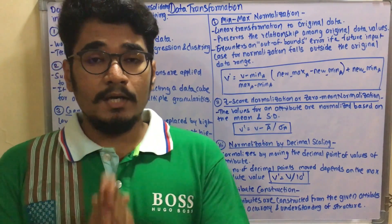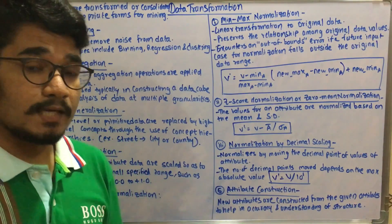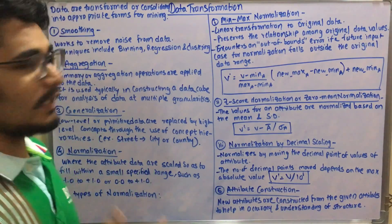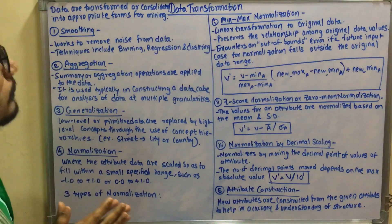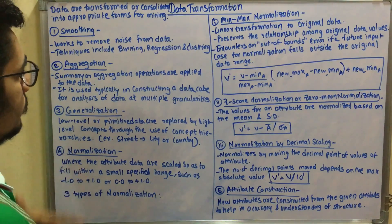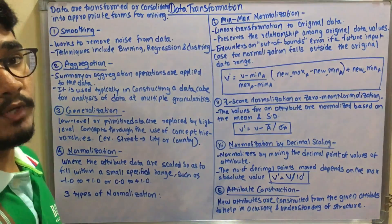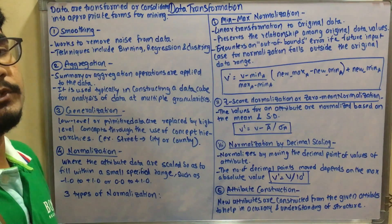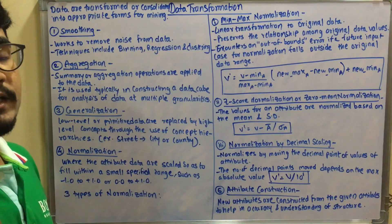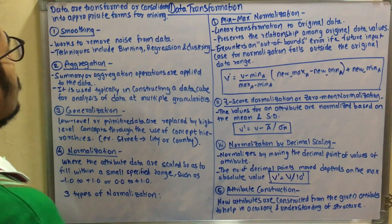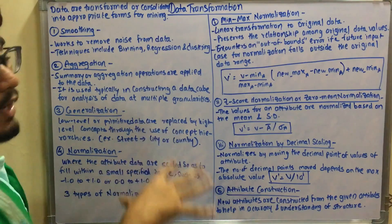So let's see what are the different data transformation techniques in data mining. First of all, what is data transformation? Data transformation is the transformation of data or the consolidation of data into appropriate forms in different ways or different streams. The very first technique in data transformation is the smoothing technique.